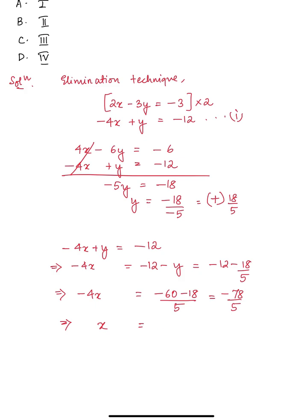So x is minus 78 by 5 times 1 by minus 4. So this is 78 by 20, and this is also positive. So we get the value of x also positive and y also positive.